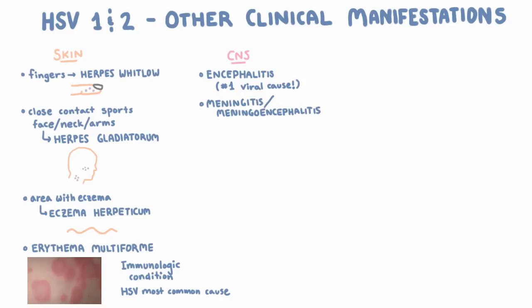Moving to an extension of the CNS — the eye — HSV can cause keratitis and retinitis. Keratitis means infection of the cornea, and retinitis is infection of the retina. This retinitis can actually cause permanent vision loss.